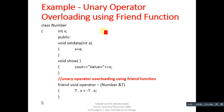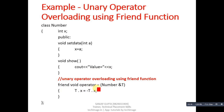Now an example of unary operator overloading using friend function. The name of the class is 'number'. In the public section, set_data function assigns a value into x, and the show function prints the value of x on the console. The overloaded minus operator is defined with friend: 'friend void operator-(number &t)'. The argument is received explicitly using call by reference.